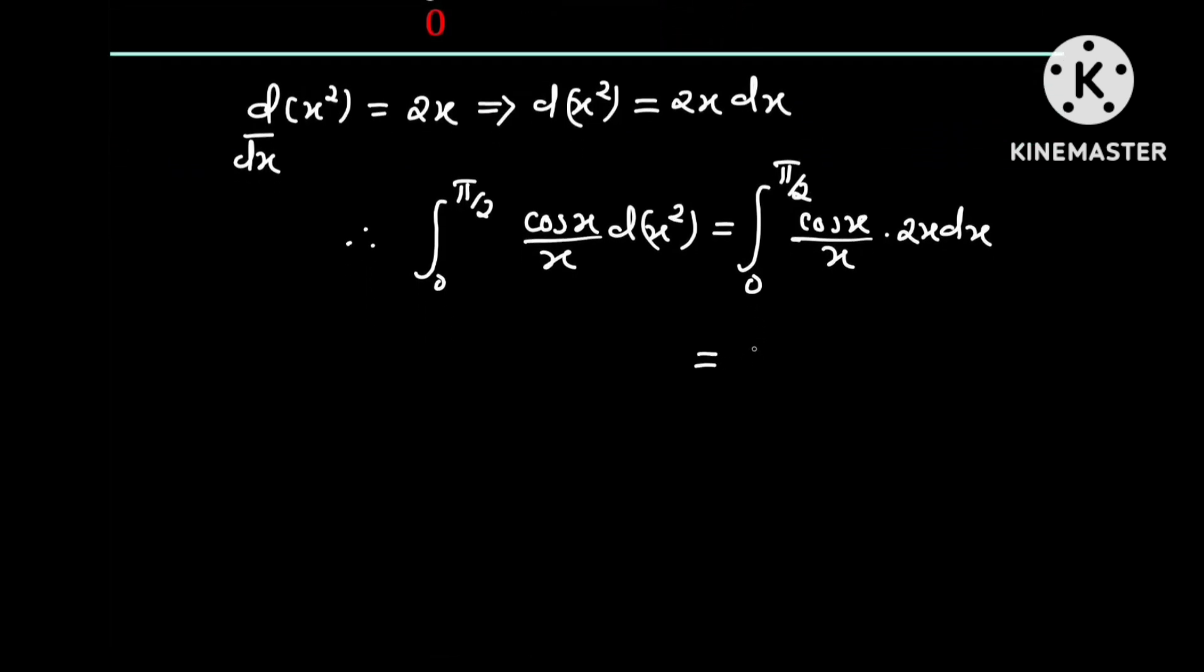And this is equal to the integral from 0 to pi over 2 of 2 cosine x dx.